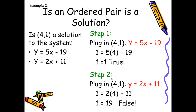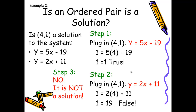In step two, I plug the point into the second equation, y equals 2x plus 11. Substituting and simplifying, I get 1 equals 2 times 4, which is 8, plus 11. That's 19, and 1 does not equal 19 — that is false. So in step three, I conclude that no, (4, 1) is not a solution. You may notice that one equation was made true by the ordered pair; however, that is not good enough. For (4, 1) to be a solution to the system, both equations must be made true.